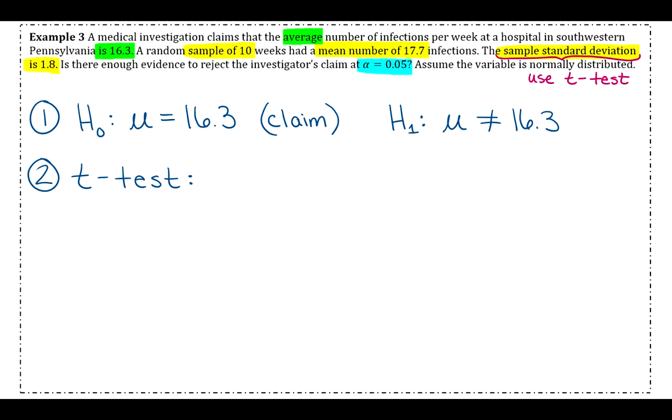last section you had to have been given the population standard deviation in order to do a z-test. If you are not given that, or if alternatively they give you the sample standard deviation, then you're going to do a t-test. Hopefully that sounds familiar. It's exactly what we had previously learned as far as z-intervals and t-intervals. So same idea as before. Okay,